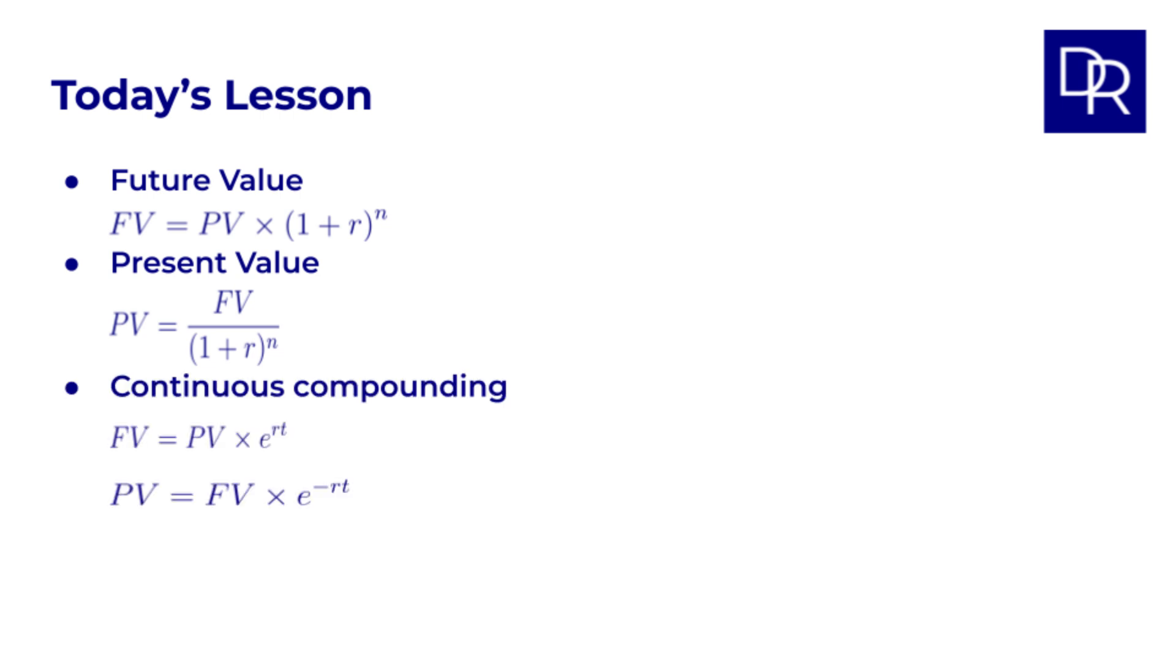So, in this lesson we looked at how an initial investment can grow over time with discrete compounding, considering different compounding frequencies. And we also examined how to discount a future cash flow back to its present value. We even touched upon continuous compounding and discounting and how to implement all of those calculations in the spreadsheet.